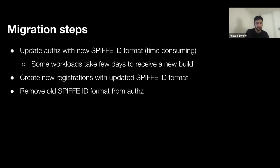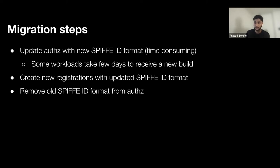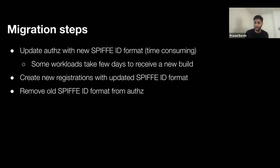That was the first step. Then we updated the SPIFFE ID format and created all the new registrations. We also had to consider scalability — how many registrations a SPIRE server can handle. We were also seeing agents that cache different identities cause out-of-memory issues. So we couldn't update all identities at once; we had to take it in small batches — introduce new ones, remove old ones — so we didn't exceed total registration counts or increase registrations per agent. The last step was removing the old SPIFFE ID from OTC policies.